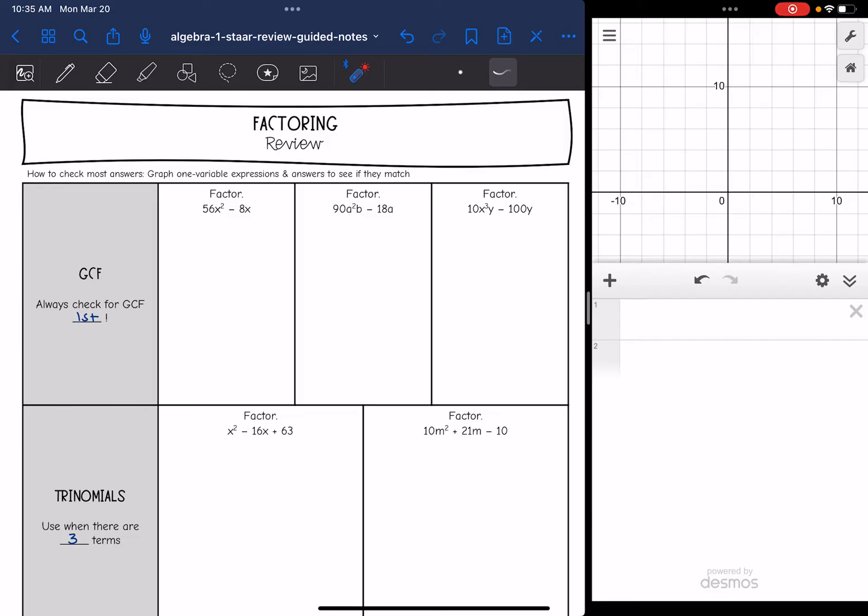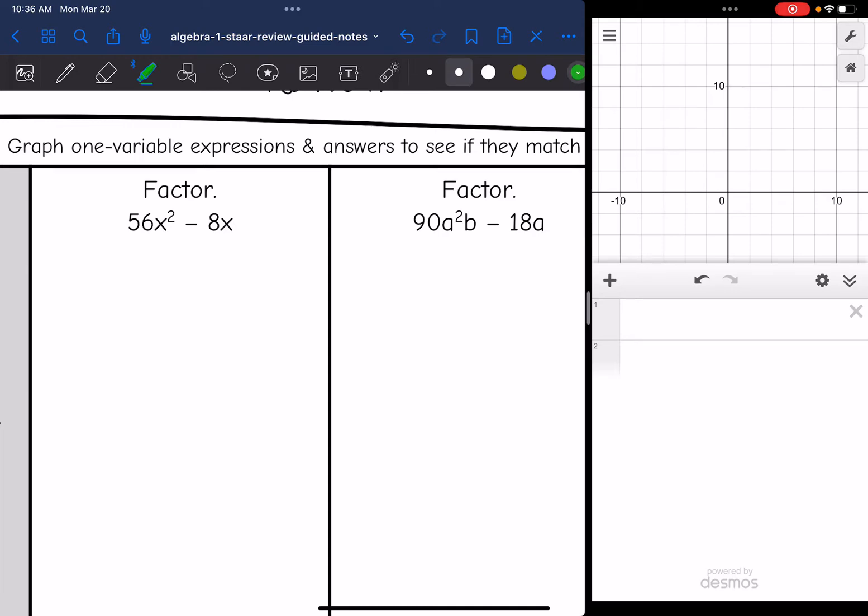We're going to review greatest common factor first because that is what you always want to check for first when you are factoring. Remember, you just look at the numbers and you think about what's the largest number that's going to go into both of those numbers, and that would be 8.